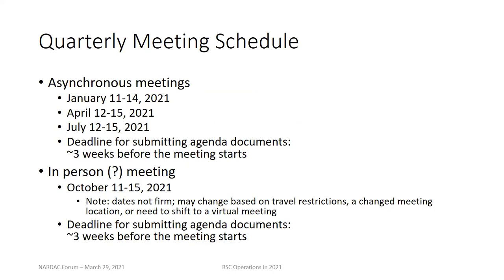We want to be responsive to user feedback. We have a quarterly meeting schedule, primarily conducted asynchronously. We held our first one this year in January, the next one is coming up soon in April, and we have one in July. The deadline for submitting agenda and documents for RSC consideration is approximately three weeks before the meeting starts. This allows our members to read and contemplate the issues and share them with their communities as needed.